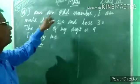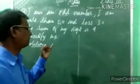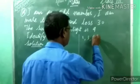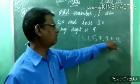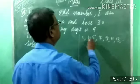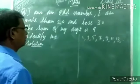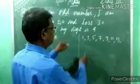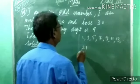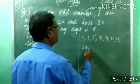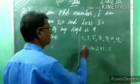We want a two-digit odd number more than 20 and less than 30. After 20 — which is an even number — the next odd number is 21. Now, 21 is more than 20 and less than 30, so it qualifies. But check the digit sum: 2 plus 1 is 3. We want 9, so 21 is not possible. Next odd number after 21 is 23: 2 plus 3 is 5 — not 9, not possible.